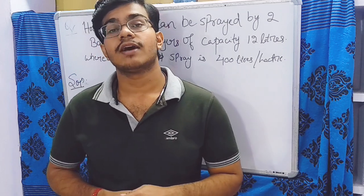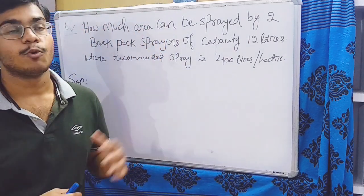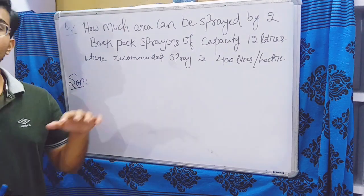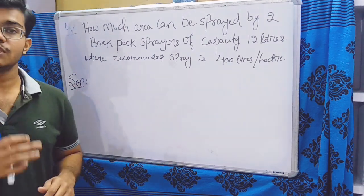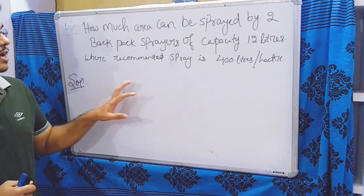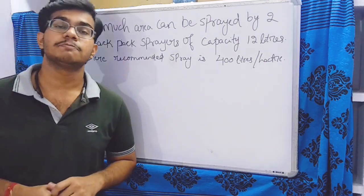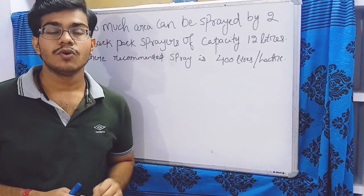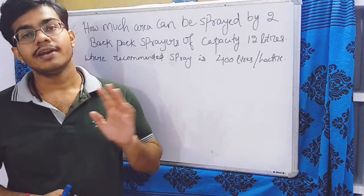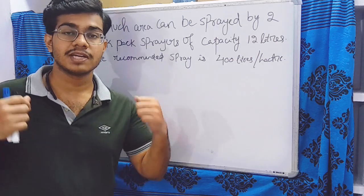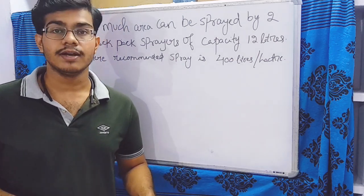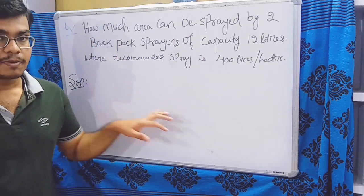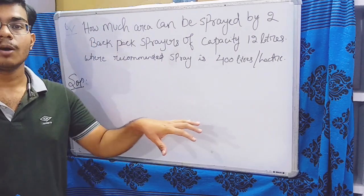In this video we have a calculation on the board: how much area can be sprayed by two backpack sprayers of capacity 12 liters if the recommended spray is 400 liters per hectare? This question means there are two backpack sprayers, each with a capacity of 12 liters, that we wear and spray in the field.